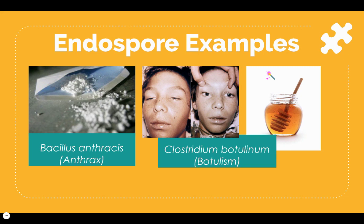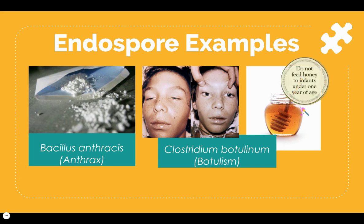Botulism exists naturally in some raw foods, including honey in very small amounts. Honey is safe to eat, but if you look at the back of a bottle of honey, there's always a warning label that says do not feed honey to infants under one year of age. The reason is that botulism can actually kill an infant, whose immune system is not mature enough to handle the toxin it produces.